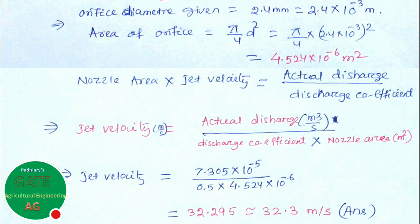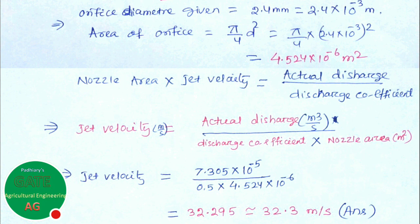So 32.3 meter per second is the answer for the jet velocity Z. Remember: actual discharge, discharge coefficient, and nozzle area are very important. Inside the nozzle there will be some discharge, and outside the nozzle the jet velocity Z will be there — it will shrink and then there will be an opening. The coefficient of discharge CD is used to find the actual discharge from theoretical discharge at the nozzle. This ends the problem. Hope you understand, and I will upload other problems very soon. Goodbye. Thank you.